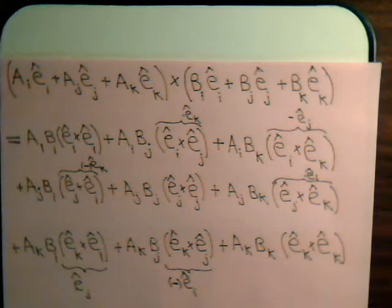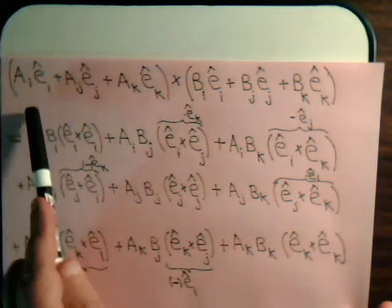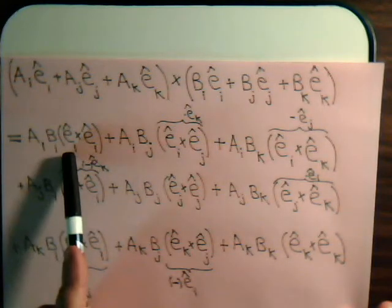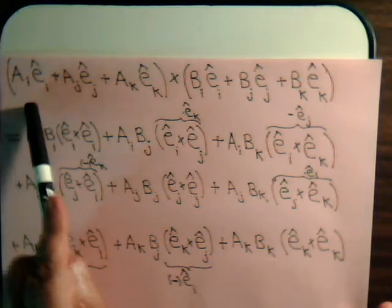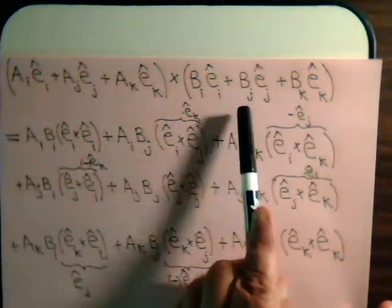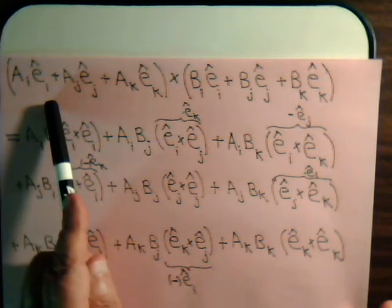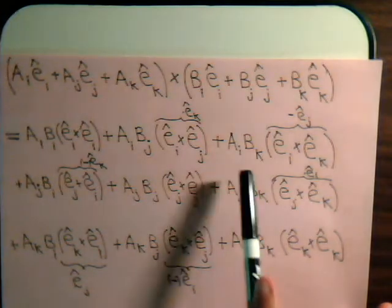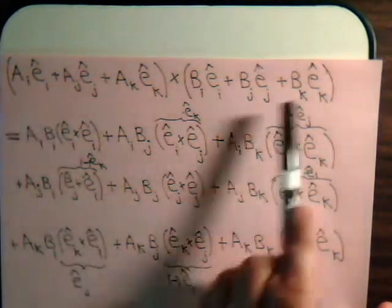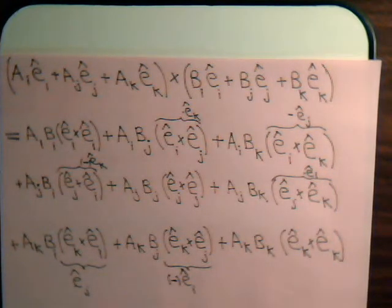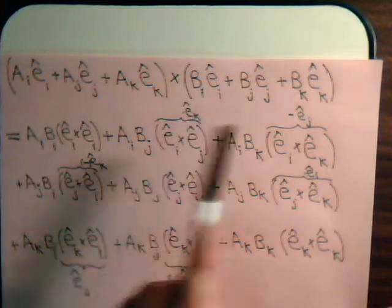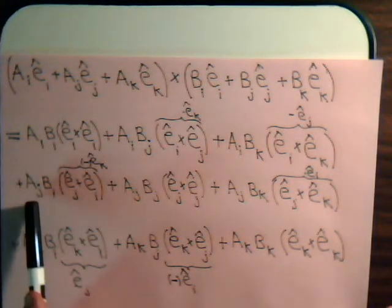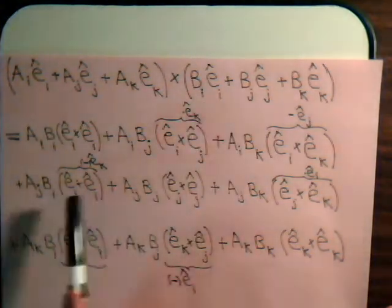If we go ahead and just try to grind it out, what kind of expression do we end up with? To begin with, we have a_i times b_i, then e_i cross e_i. Then we have a_i times b_j, and e_i cross e_j. Then we have a_i times b_k, and e_i cross e_k. Those are the first three terms. Continuing on, we will have the next coefficient pair, and we have e_j cross e_i.